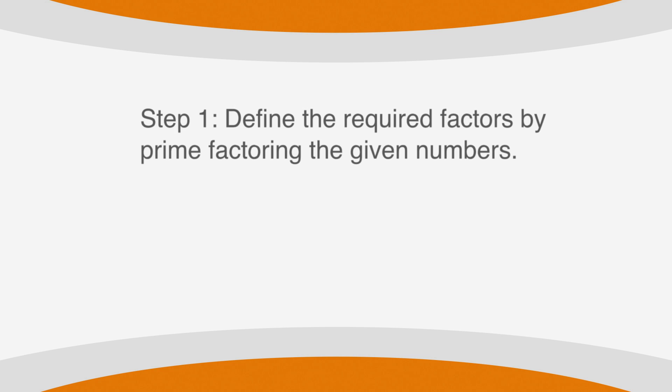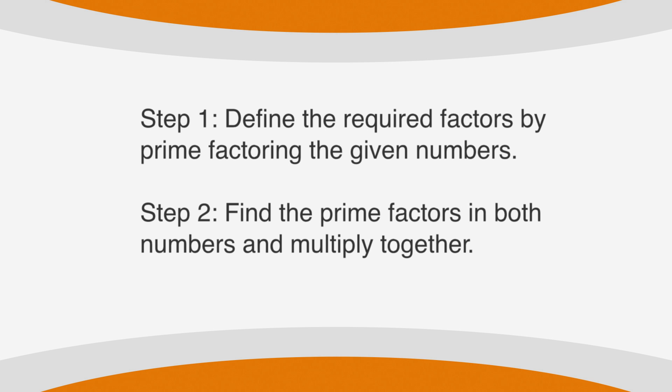Now that was pretty straightforward. But as in life, things on the GRE are not always so simple. What if we're asked to find the least common multiple of two very large numbers? Things get a little more complicated, so let's devise a plan. Step 1: define the required factors by prime factoring the given numbers. Step 2: find the prime factors in both numbers and multiply together. Prime factoring is the process of factoring to find only the prime numbers that make up the number.